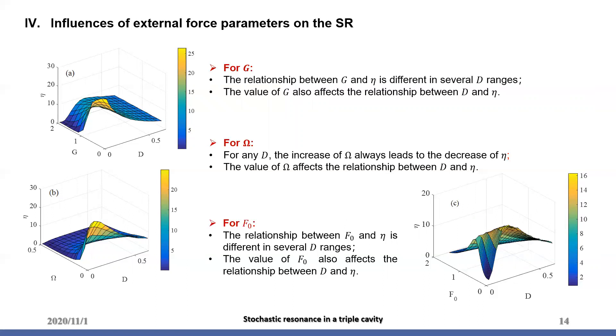Finally, influences of force parameters are discussed. For G, its influence on eta depends on D, and its value affects the relations of eta and D, see figure A. For eta versus D, when D is small, an increase of G leads to a decrease of eta. When D is large, G doesn't affect eta. For eta versus G, when G is near zero, an increase of D leads to a decrease of eta. And otherwise, the eta and D curve has a maximum.